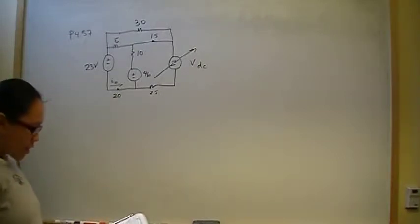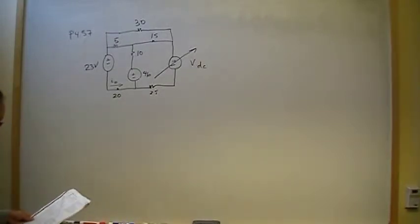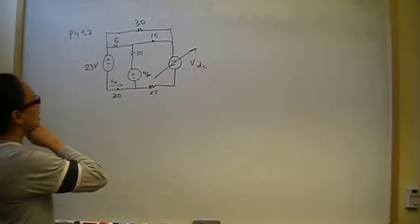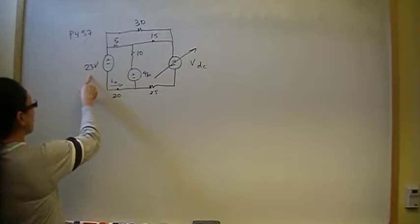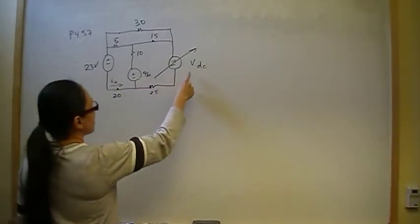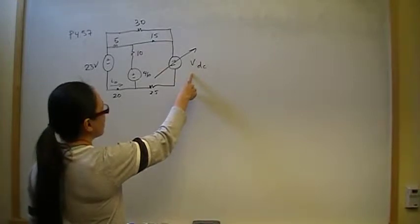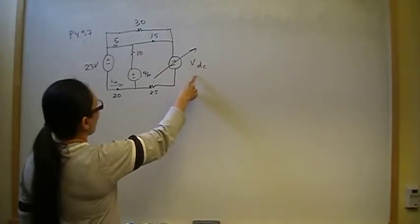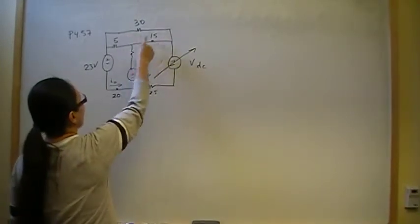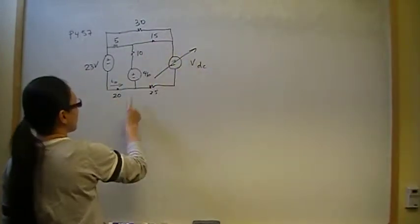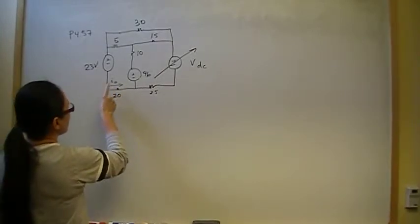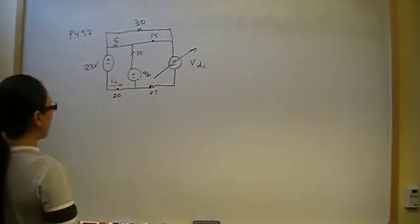Let's go ahead and describe the circuit. We have three voltage sources: a 23-volt independent voltage source, a 46-volt source, and a variable DC voltage source. The resistances are 35, 15, 10, 20, and 25 ohms. There's a current I0 through the 20-ohm resistor.